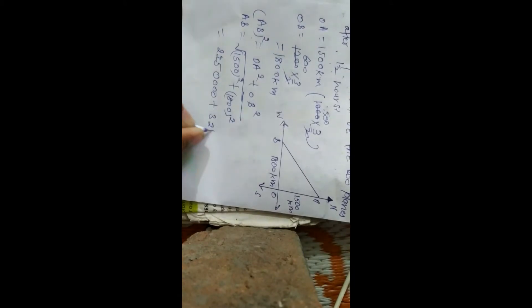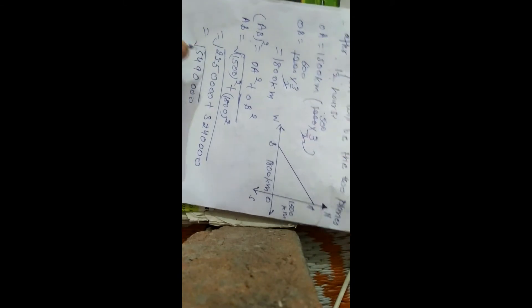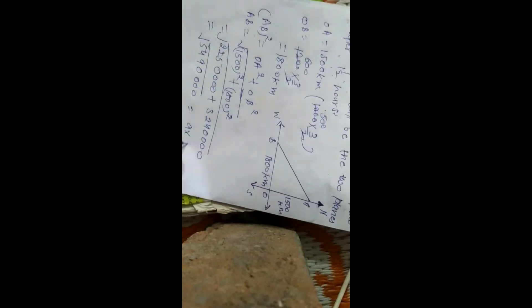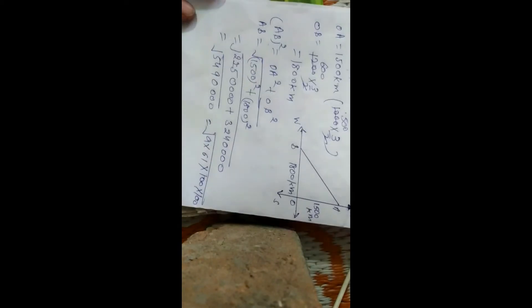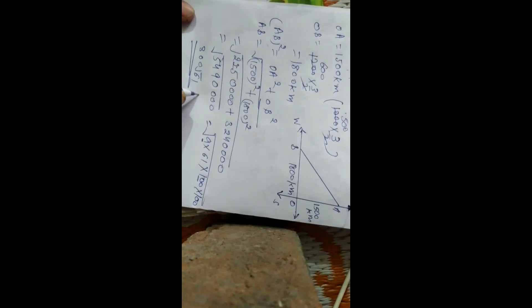Setting up the calculation: 1500² = 2,250,000 and 1800² = 3,240,000. Using prime factorization, the square root works out to 300√61 km. That is our answer for the distance between the two planes.